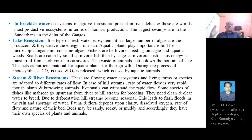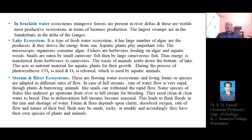Brackish water ecosystems are mainly composed of mangrove forests and are considered the world's most productive ecosystems in terms of biomass production. The largest such swamps are in the Sundarbans at the delta of the Ganga River, where it joins the seawater — forming a major brackish water ecosystem.